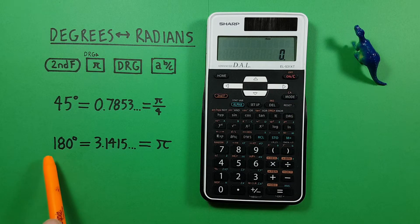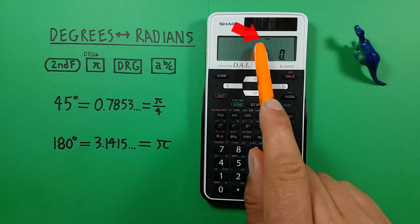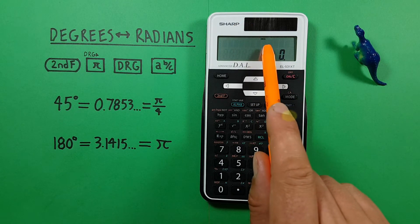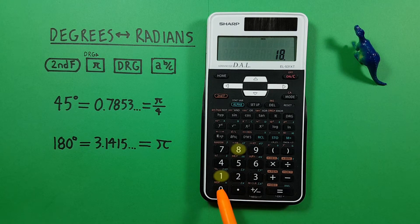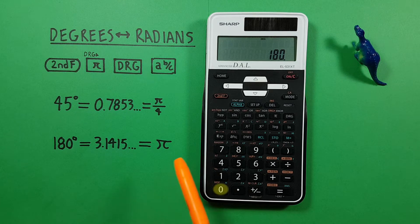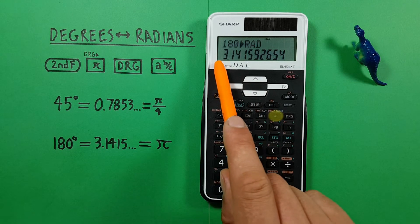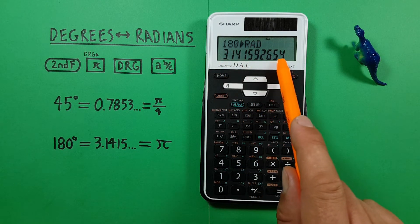Another example, let's say we're given 180 degrees and want to convert that to radians. Again, we want to make sure we're set to degrees, which is what we're entering at the top. There we go. Now we can enter our 180. And then use the angle conversion key to get 180 degrees is equal to 3.1415, etc. radians.